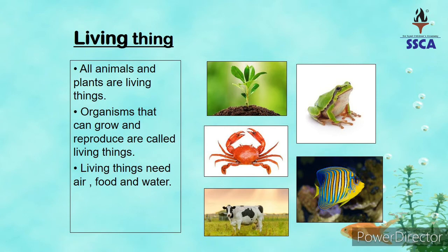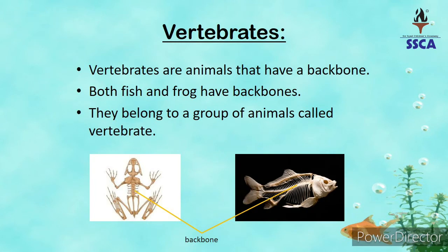Living things need air, food, and water. Living things ko hawa, paani, aur giza ki zaroorat hoti hai. Vertebrates are animals that have a backbone.